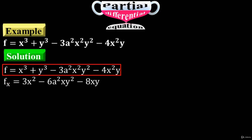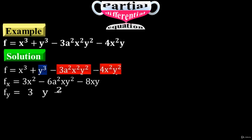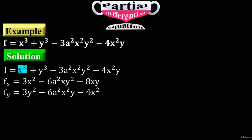Now take this function and differentiate it with respect to y. These are the terms with y variables, so just differentiate them with respect to y to have f sub y equals 3y squared minus 6a squared times x squared times y minus 4x squared. Ignore x cubed because there is no y variable. The function has now been differentiated up to first order.